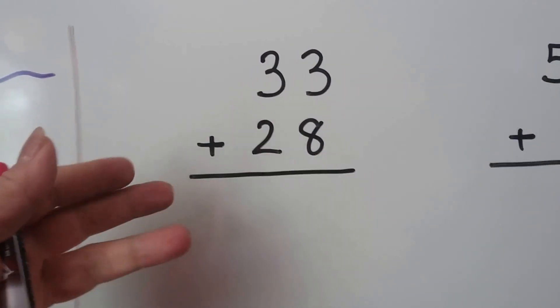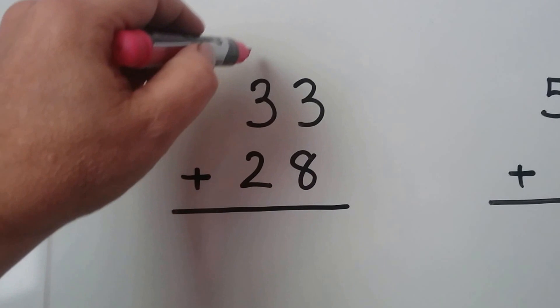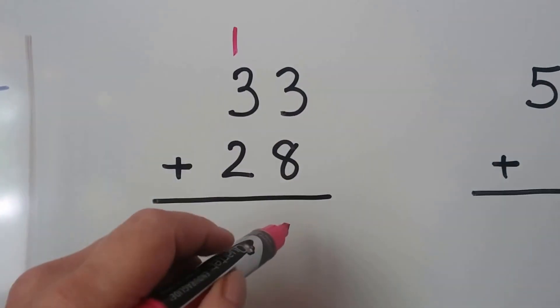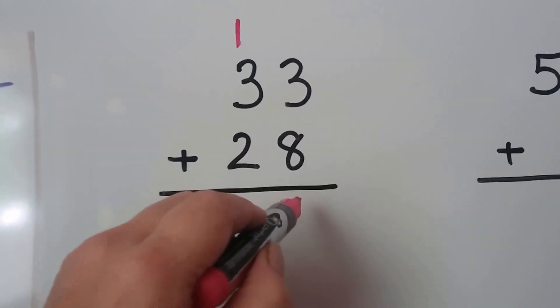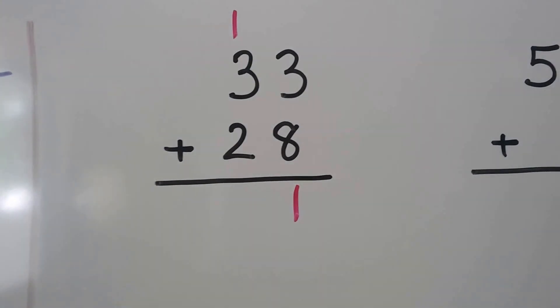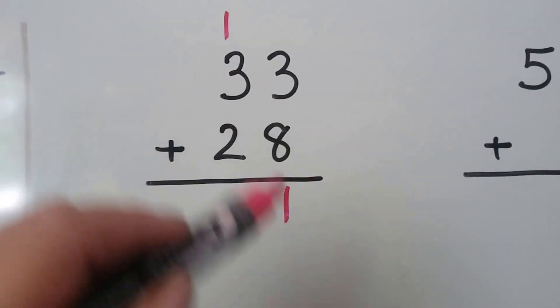I'm going to start with the larger number 8 and count on the 3: 8, 9, 10, 11. We regroup the 1 from the 11 in the tens place here. And the other 1 from the ones place there. That's an 11.